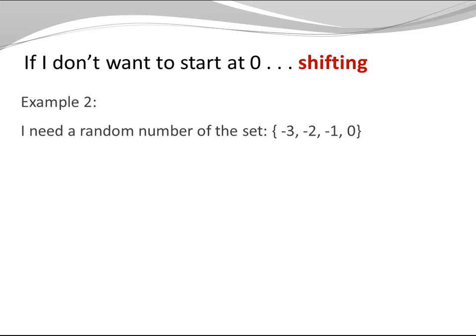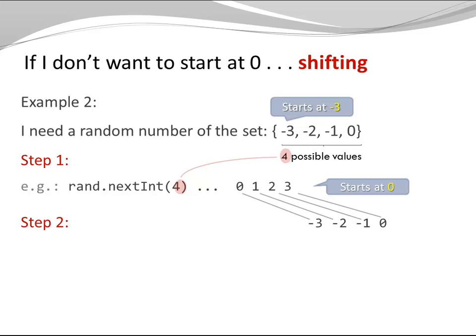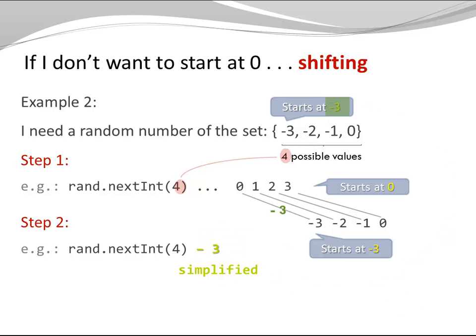A second example. Let's say I need a random number of the set: minus 3, minus 2, minus 1, 0. Here I start at minus 3. Step 1: I need to know the number of possible values — this is 4 — and I'm calling nextInt with argument 4. At this point I receive one of the values 0, 1, 2, and 3. I still need to add something to map to my desired set. I can do that by subtracting 3, or adding minus 3 — notice minus 3 is the start of the list of my desired elements. We can simplify and just say: rand.nextInt(4) minus 3.